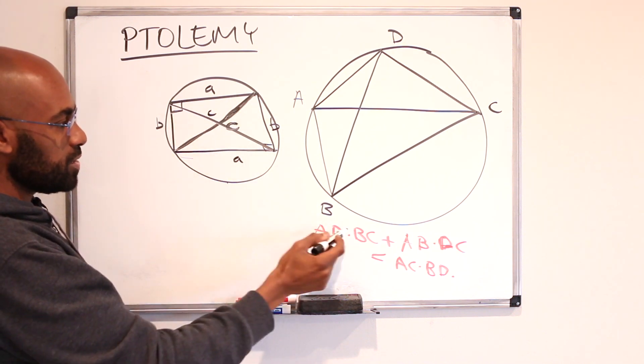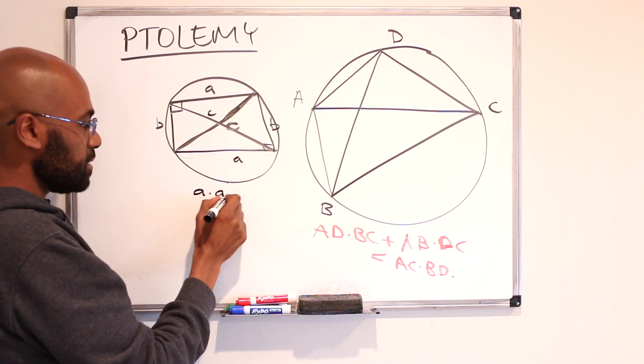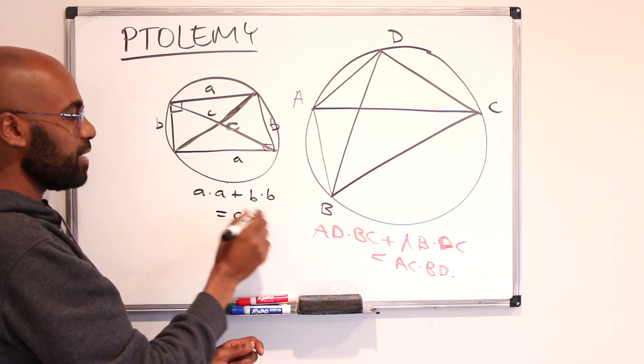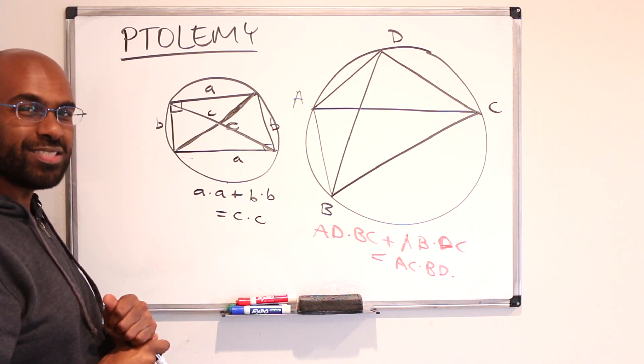So by Ptolemy's, the product of the opposite side lengths added up has to equal the product of the diagonals and that gives us that A squared plus B squared is C squared.